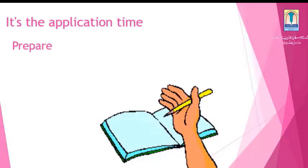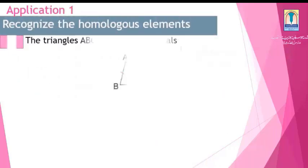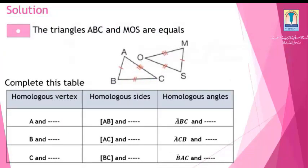It's application time. Please prepare your draft sheets, pencils, rulers, and math book. Our first application is to recognize homologous elements. Triangles ABC and MOS are congruent. Complete the table by writing the homologous vertices, sides, and angles. The homologous vertices are A and M, B and S, C and O. The homologous sides are AB and MS, AC and MO, BC and SO. We also have corresponding homologous angles.